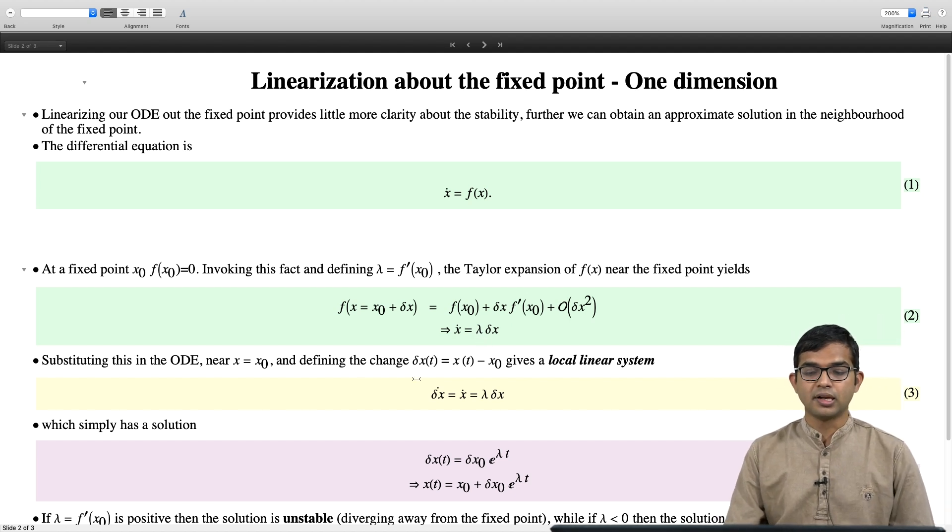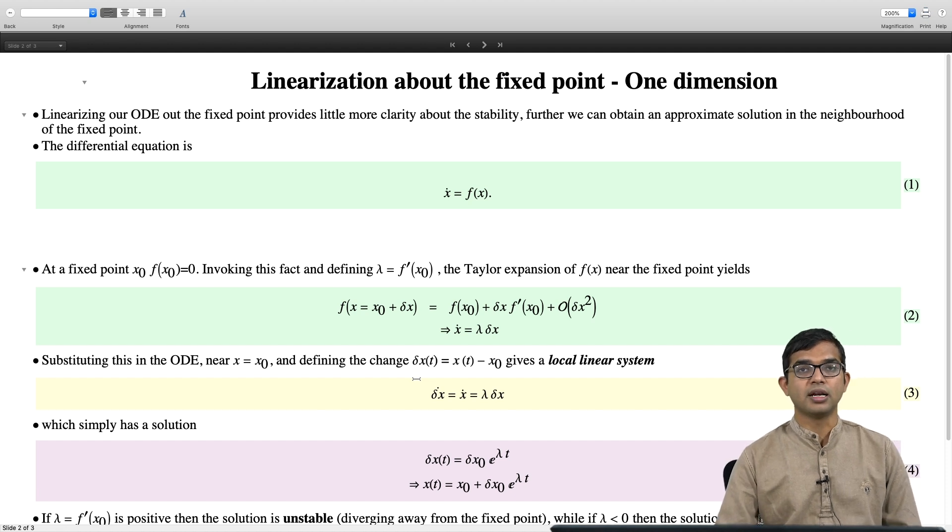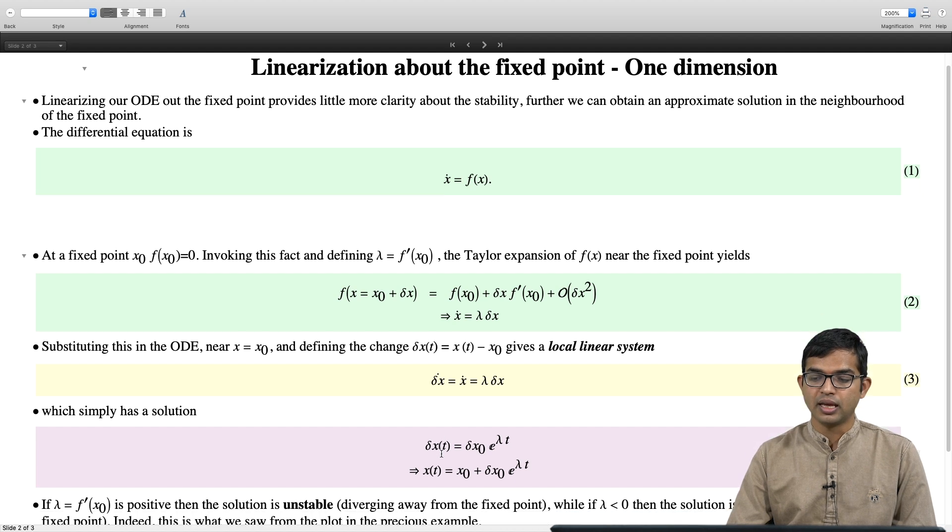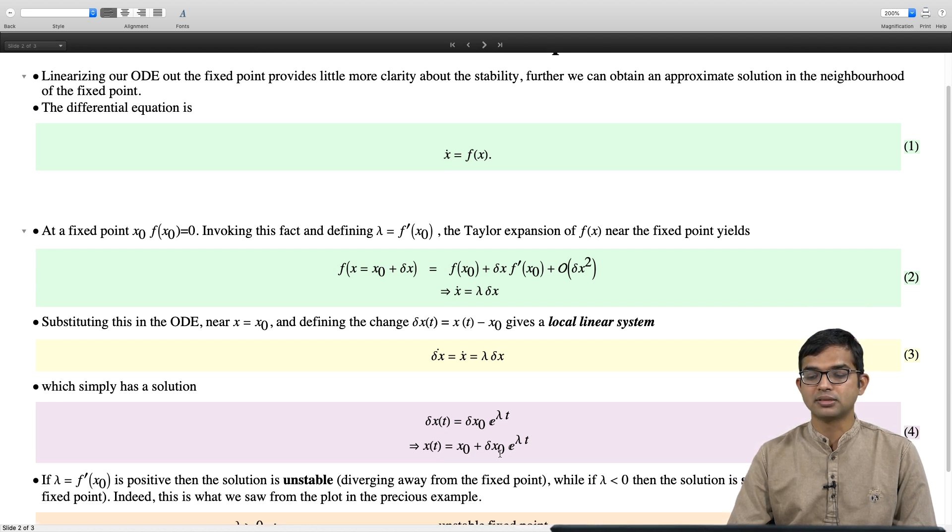Whether your system is going to keep on running away from your fixed point or whether it is going to get merged into your fixed point will rely on the sign of lambda. If lambda is positive, then it is going to keep on increasing. The solution is x of t is equal to x naught plus delta x naught times e to the lambda t.